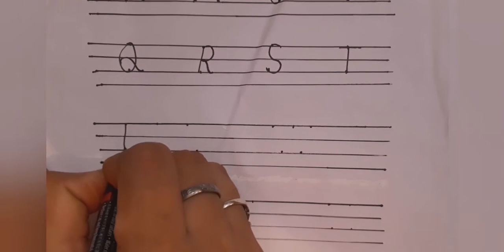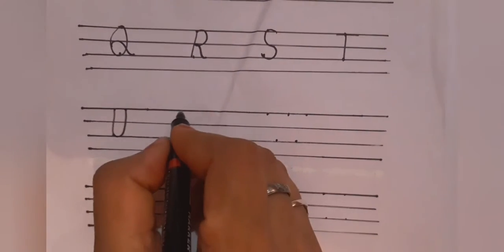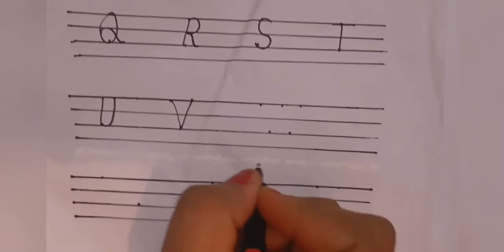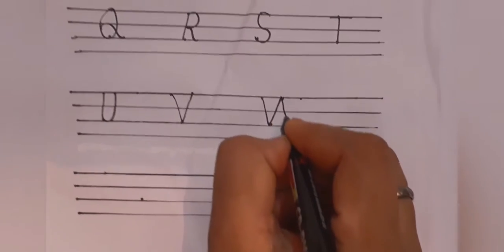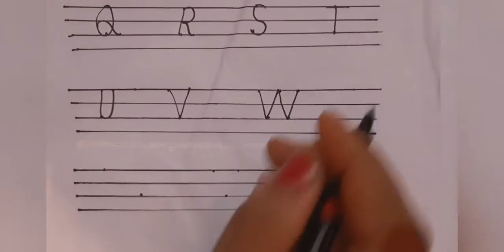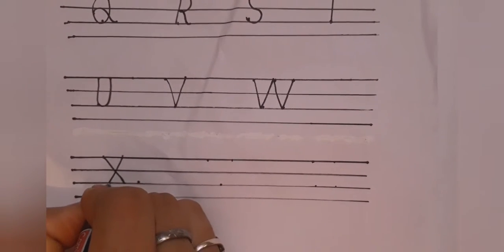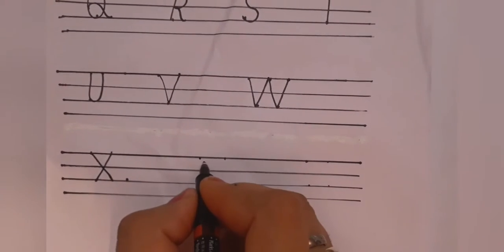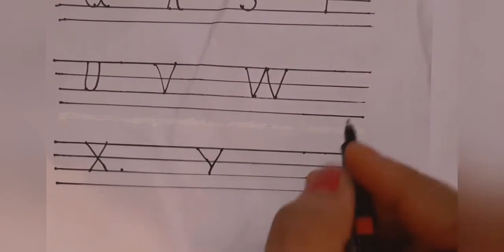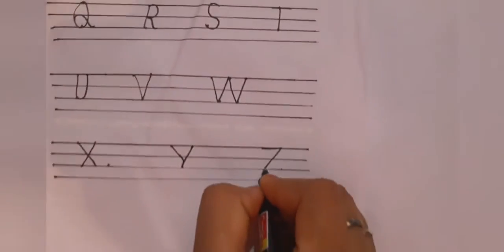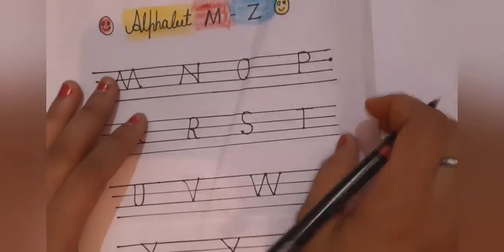U for umbrella. V for van. W for watch. X for x-ray. Y for yak. Z for zebra. Repeat again.